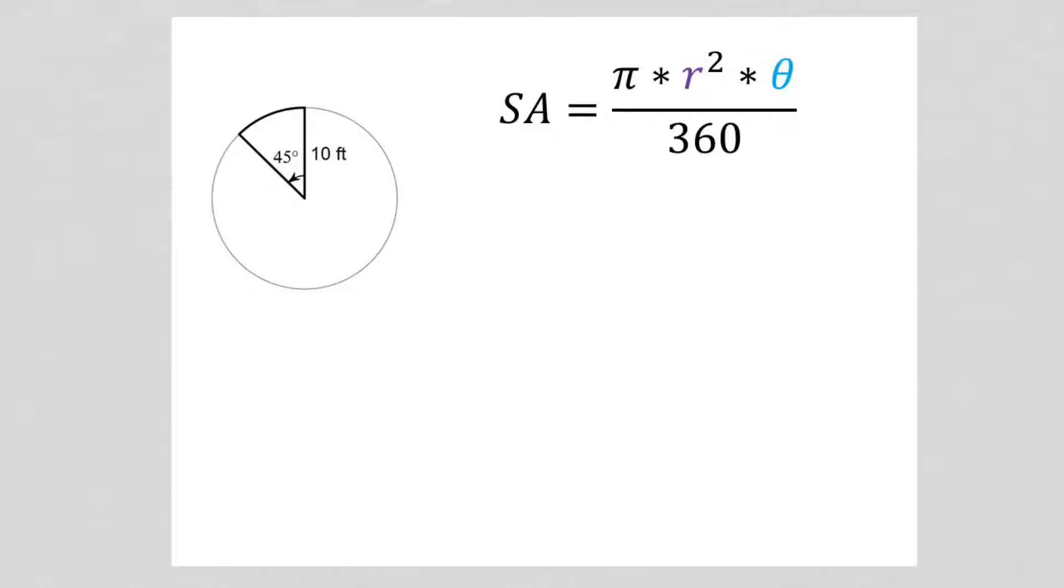Sector area. That is the area of one section of a circle. Think of it as like a slice of pizza - you have the whole pizza, you have the area of the whole pizza, and then the area of just one piece.